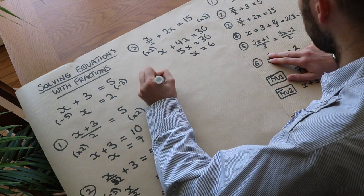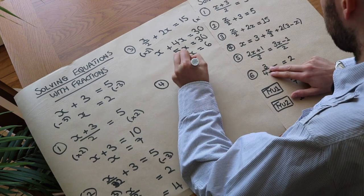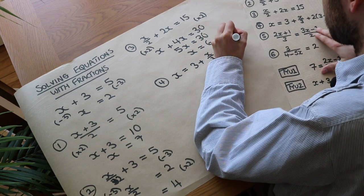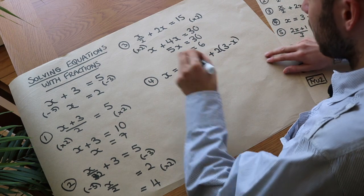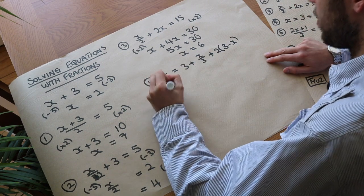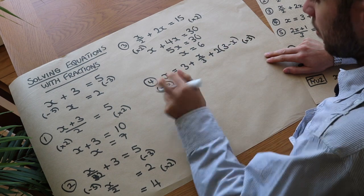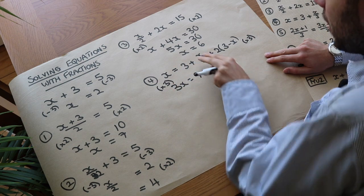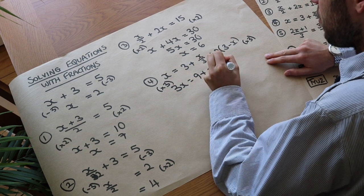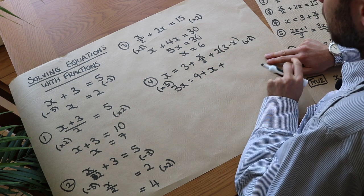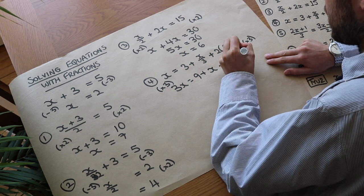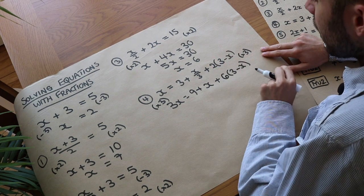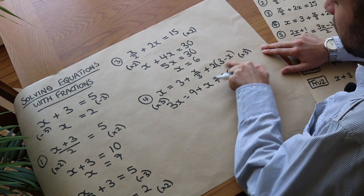Next, a similar but harder equation: x equals 3 plus x over 3 plus 2 times (3 minus x). We don't want the over 3, so we multiply everything by 3. Multiplying each term by 3 gives: 3x equals 9, plus x (the over 3 cancels), plus 6 lots of (3 minus x). A mistake students might make here is multiplying both factors inside the last term by 3, but that would be multiplying by 3 twice.